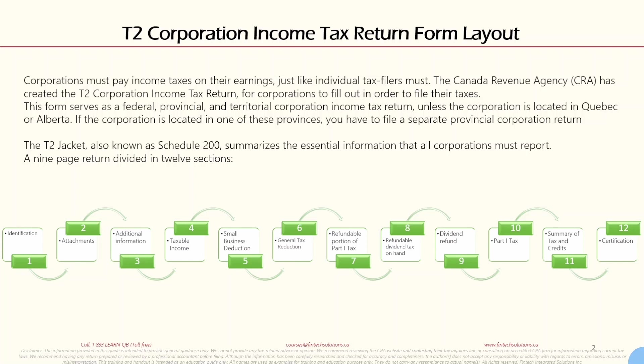Corporations must pay income taxes on their earnings, just like individual tax filers must. The Canada Revenue Agency (CRA) has created the T2 Corporation Income Tax Return for corporations to file their taxes. This form serves as a federal, provincial, and territorial corporation income tax return, unless the corporation is located in Quebec or Alberta — those two provinces have their own separate corporation returns.